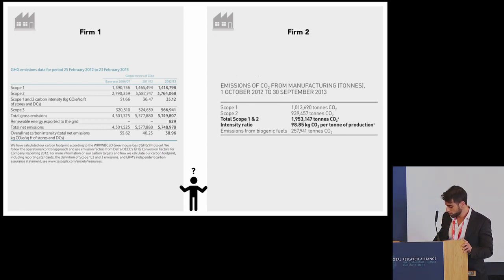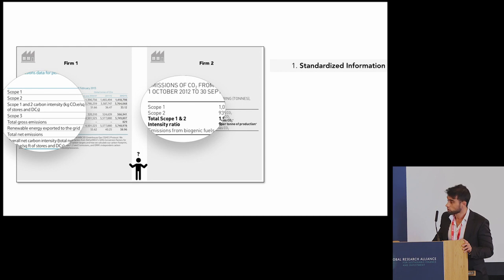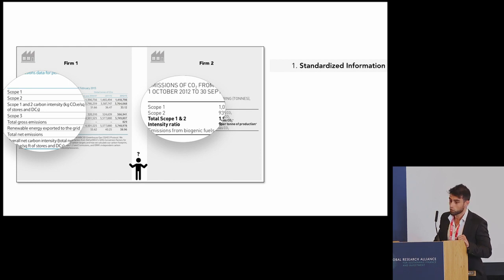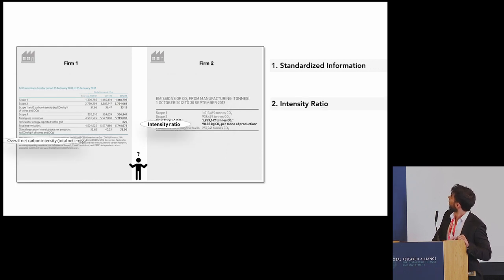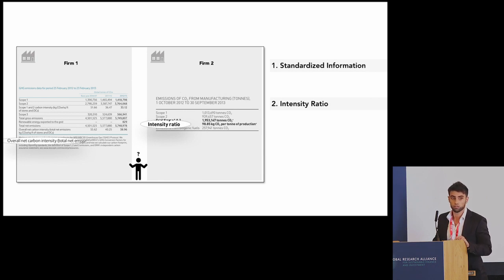It's easier because we have standardized information — namely scope one, scope two, and metric tonnes. We also have an intensity ratio, which is basically a ratio of total emissions over a quantifiable factor such as sales or assets.